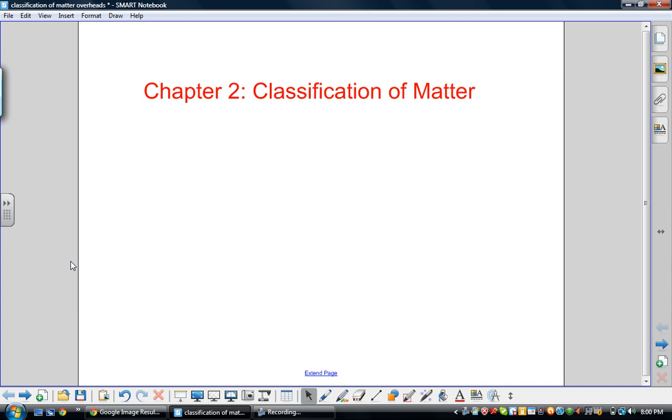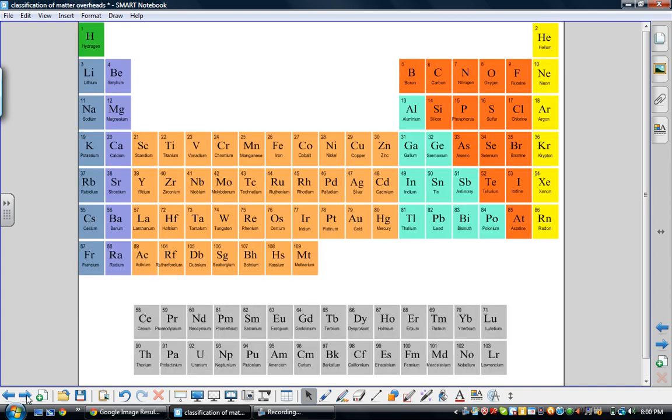This chapter introduces us to the periodic table and the idea that the periodic element table shows us elements. Each of these squares represents an element, for instance, the element iron, element boron, element carbon.